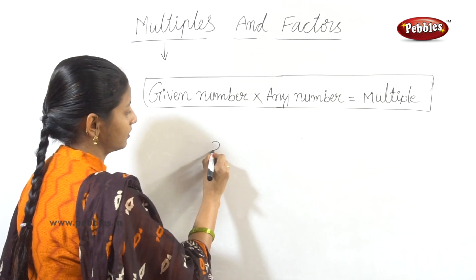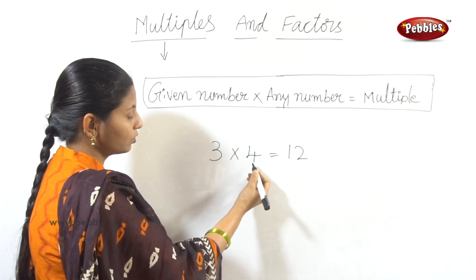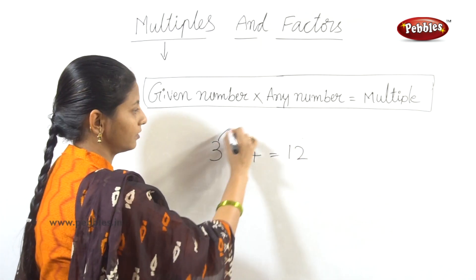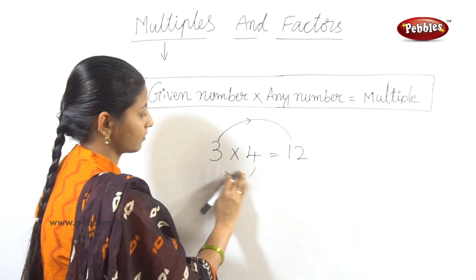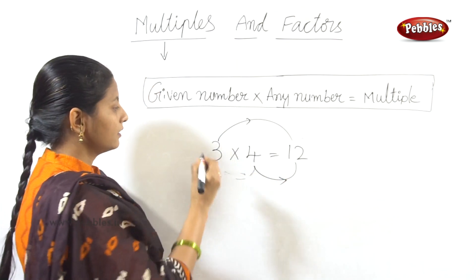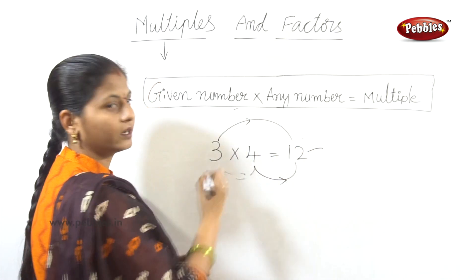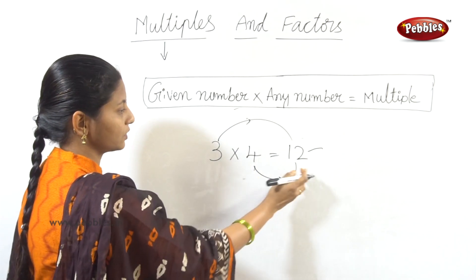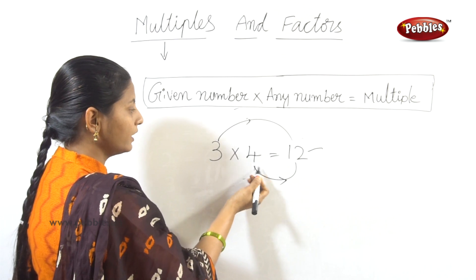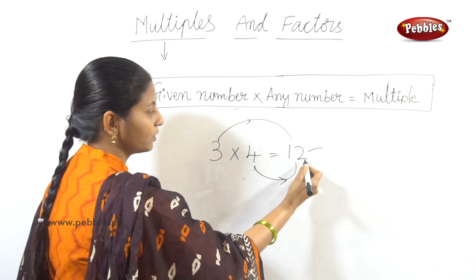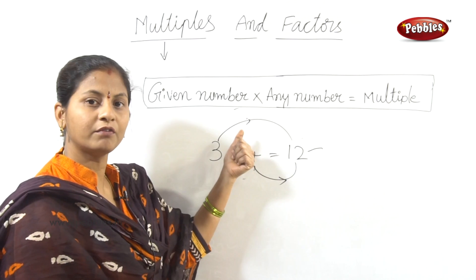For example, 3 into 4 is equal to 12. That means 12 is a multiple of 3, and at the same time 12 is also a multiple of 4. So 12 is a multiple of both 3 and 4.